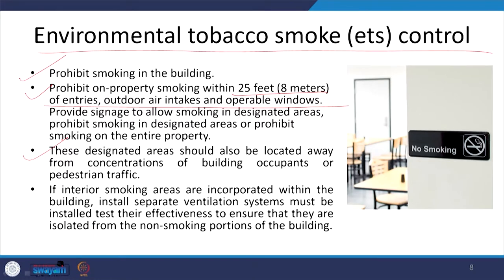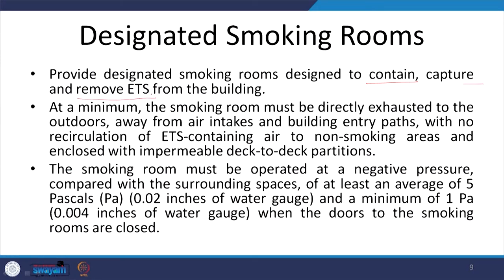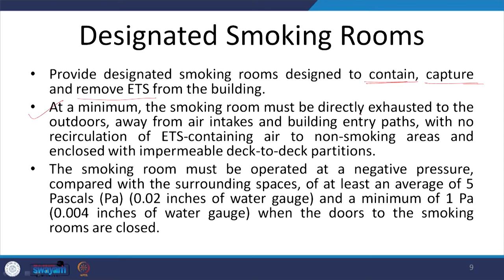If an interior smoking area is provided it must have a separate ventilation system — it cannot share the same air ventilation system as the rest of the building. Designated smoking rooms inside the building must be designed to contain, capture, and remove environmental tobacco smoke from the building, achieved both passively through design and through active systems. At a minimum the smoking room must be directly exhausted to the outdoors, and this exhaust should be away from air intakes and building entry paths so that ETS does not re-enter the building.